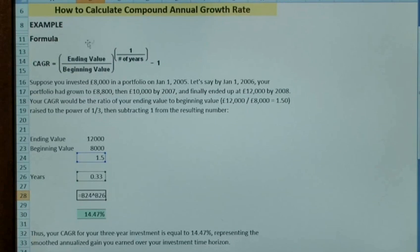Which is this section of the equation here. It gives us 1.14. We then want to take 1 away from it and show it as a percentage. So that's 1.14 less 1 as a percentage is 14.47%.